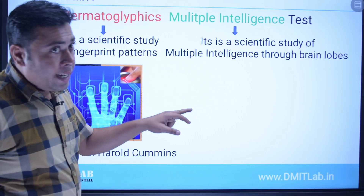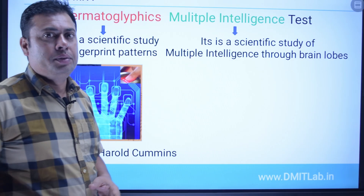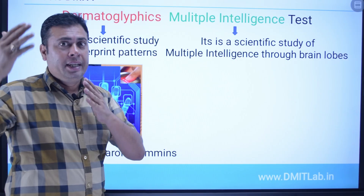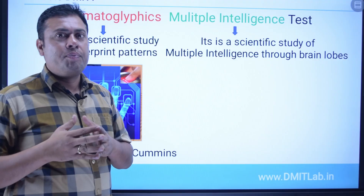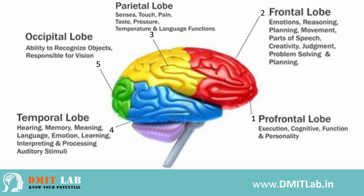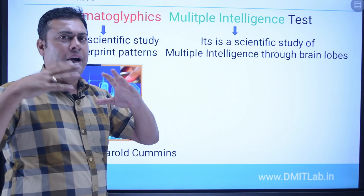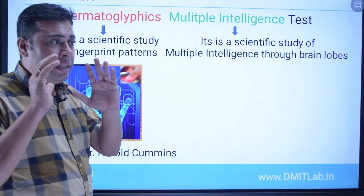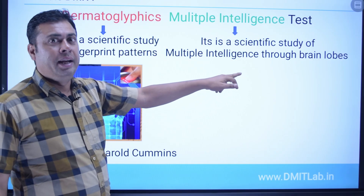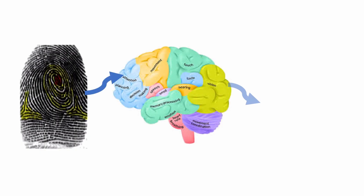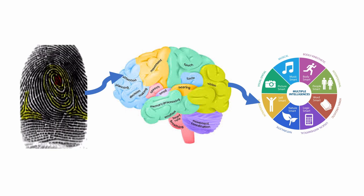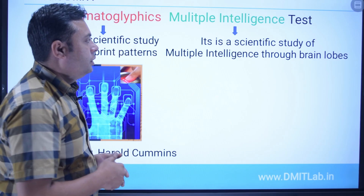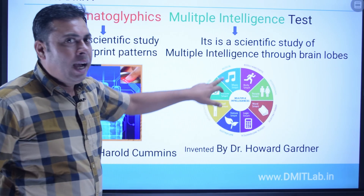Multiple intelligence is a scientific study of intelligence through the brain lobes. It is also called inborn talents. To understand our multiple intelligence, we first have to understand the brain lobes. Brain lobes control actions — moving a hand, thinking — all actions come from the brain lobes. In DMIT, through the fingerprints we understand the brain lobes, and through the brain lobes we understand multiple intelligence.